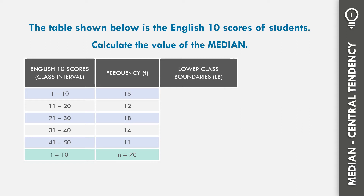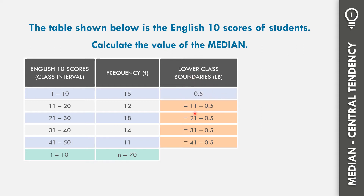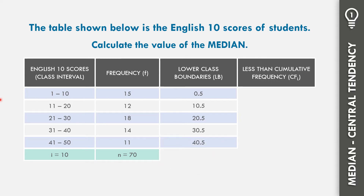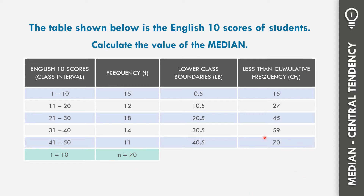Let us compute now the lower class boundaries. The lower limits are 1, 11, 21, 31, and 41. Subtracting 0.5 from each: 1 minus 0.5 is 0.5; 11 minus 0.5 is 10.5; 21 minus 0.5 is 20.5; 31 minus 0.5 is 30.5; and 41 minus 0.5 is 40.5. For the less-than cumulative frequency, starting from the lowest interval: copy 15; 15 plus 12 equals 27; 27 plus 18 equals 45; 45 plus 14 equals 59; and 59 plus 11 equals 70. The total frequency is 70.